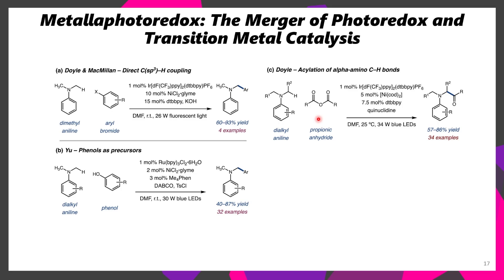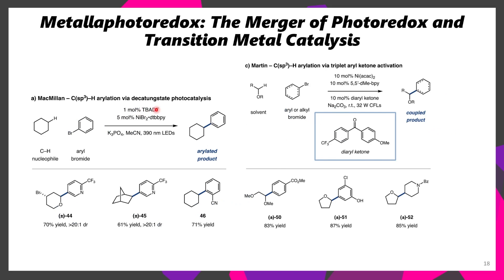If you wanted to activate some really strong C-H bonds, you could use tetrabutylammonium decatungstate or sodium decatungstate as your photocatalyst. These will have preferences for certain C-H bonds in a molecule, but they generally tend to form mixtures of products because these things are so reactive that they'll start abstracting hydrogens wherever they want in the molecule. Nonetheless, it's possible to produce derivatives such as compounds 44, 45, and 46. For positions alpha to an ether, a diaryl ketone can be used as a photocatalyst to produce substituted ether-type products.